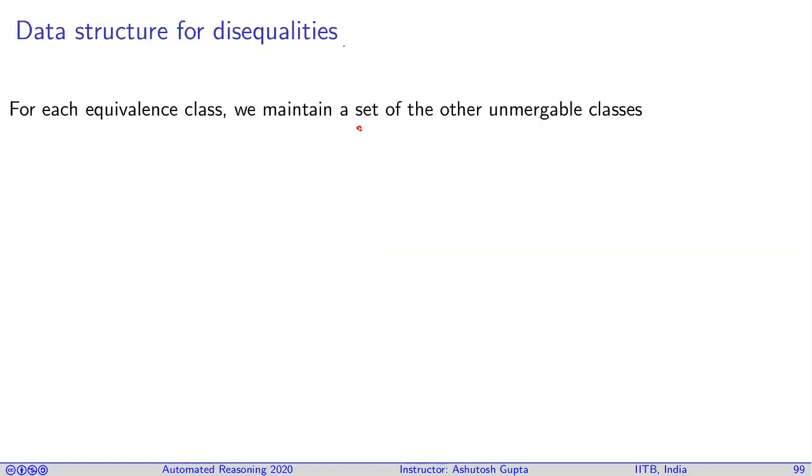For each equivalence class, we maintain a set of the other unmergeable classes. Each time you say that term t is not equal to term s, those equivalence classes cannot be merged together. So for t you remember the list of classes where s cannot be merged, and for s you also maintain another list.